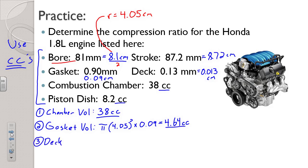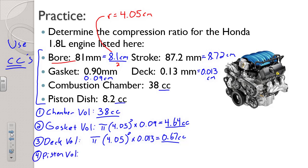Below that is our deck volume — almost the same as the gasket volume: pi times 4.05 centimeters squared, multiplied by our deck of 0.013 centimeters, giving 0.67 cc's. Below that, of course, we have our pistons. Our piston volume is given as 8.2 cc's — listed as piston dish. We don't need to change that. Adding those four together gives us a clearance volume of 38 plus 4.64 plus 0.67 plus 8.2, equaling 51.51 cc's.